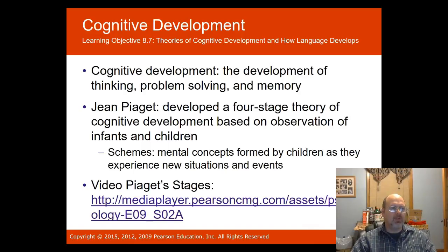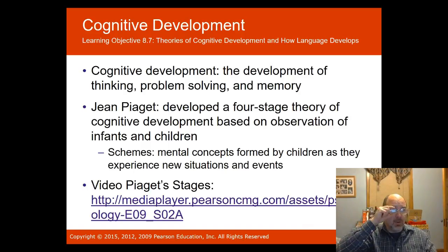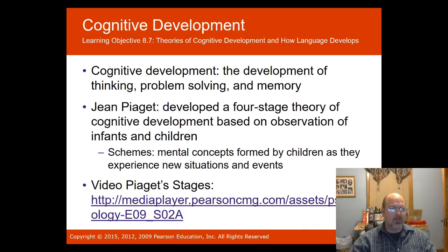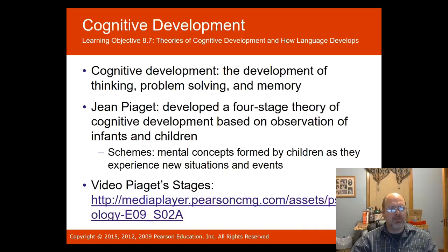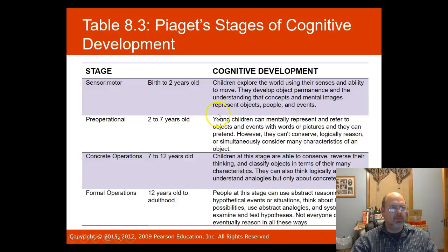Cognitive development is the development of thinking, problem-solving, and memory. Jean Piaget, a French psychologist, developed a four-stage theory of cognitive development based on his observation of infants and children. He came up with the term schemes — mental concepts formed by children as they experience new situations and events.